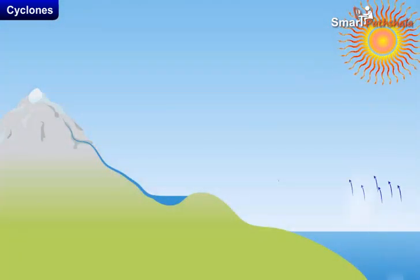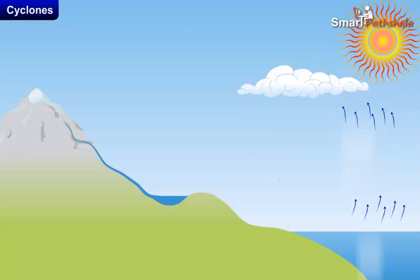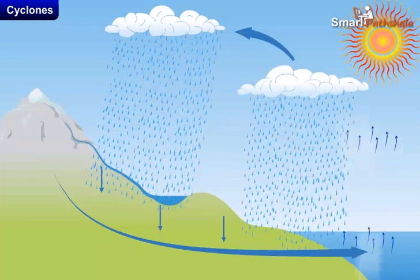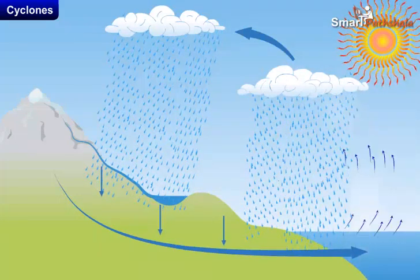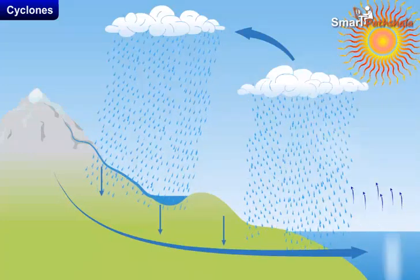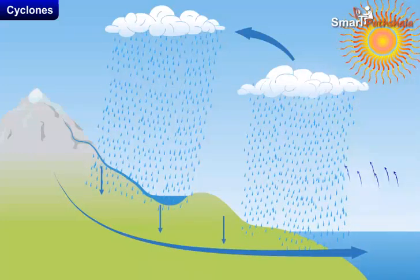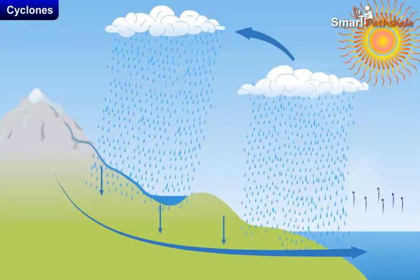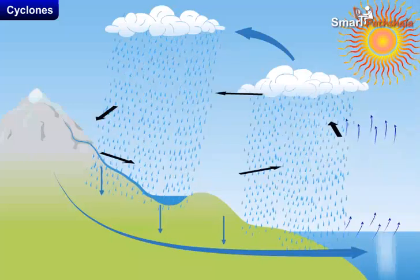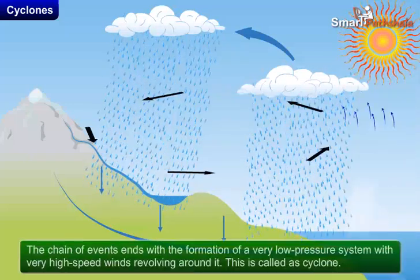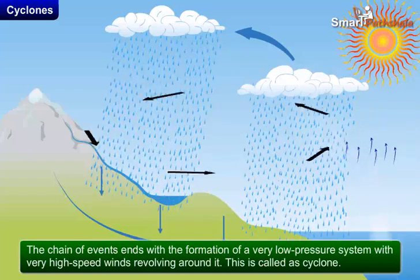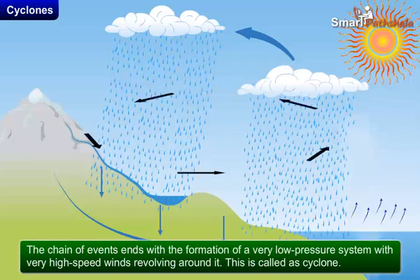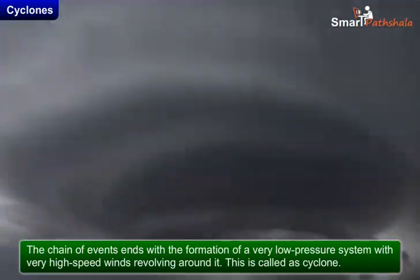As we all know, during cloud formation, water takes up heat from the atmosphere to change into vapor. When water vapor changes back to liquid form as raindrops, this heat is released into the atmosphere. The heat released warms the air around, causing the air to rise and a drop in pressure. More air rushes to the center of the storm, and this cycle is repeated. The chain of events ends with the formation of a very low pressure system with very high speed winds revolving around it. This is called a cyclone.